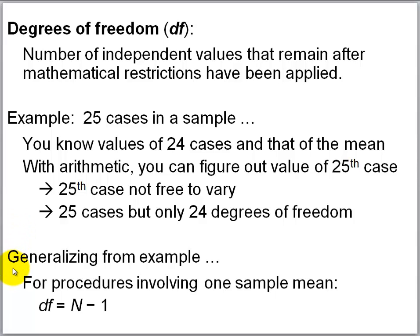For procedures we're going to study in this chapter, all of which involve a single sample mean, degrees of freedom will equal n minus 1. For instance, if there are 25 cases in our sample, the degrees of freedom will equal 24 — because 25 minus 1 equals 24.